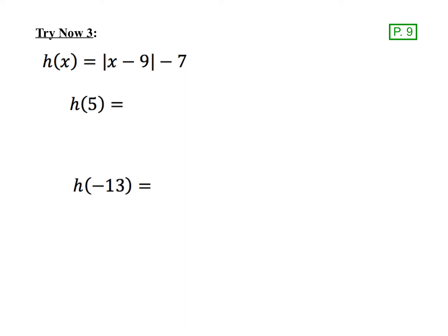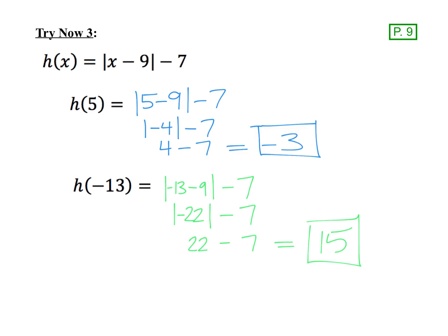Here is a try-now problem. h(x) = |x − 9| − 7. Please pause the video and give this problem a try. Here are your solutions: h(5) = |5 − 9| − 7 = |−4| − 7 = 4 − 7 = −3. For h(-13): −13 − 9 = −22, |−22| = 22, and 22 minus 7 makes 15.